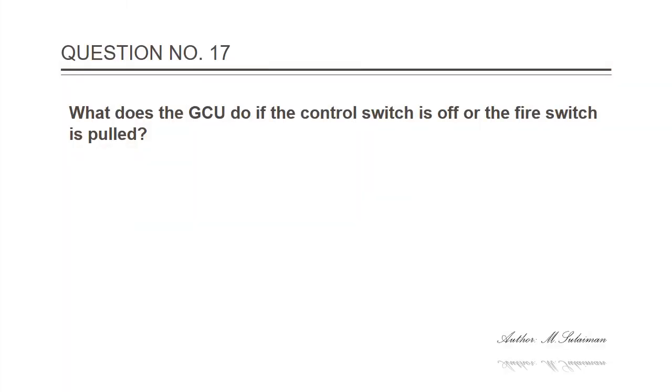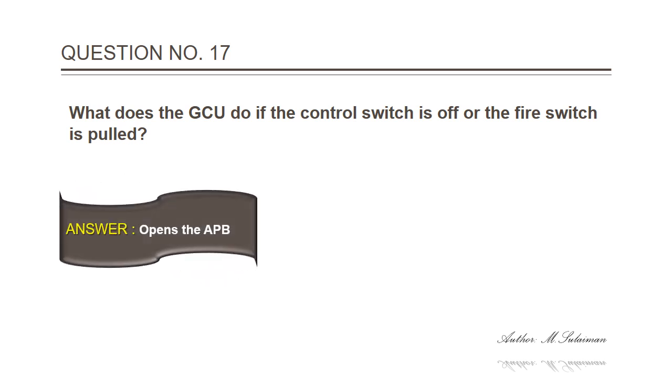Question 17: What does the GCU do if the control switch is off or the fire switch is pulled? Answer: It opens the APB.